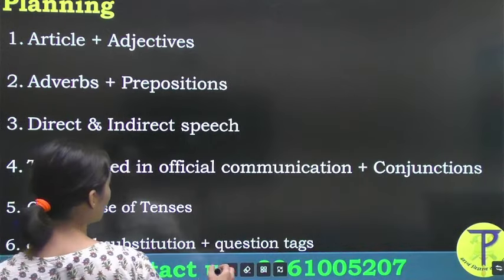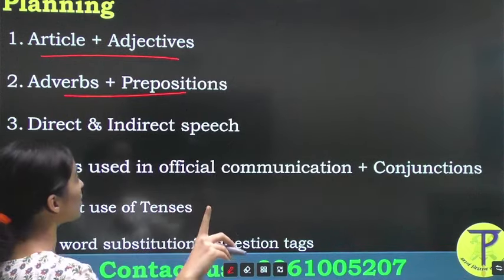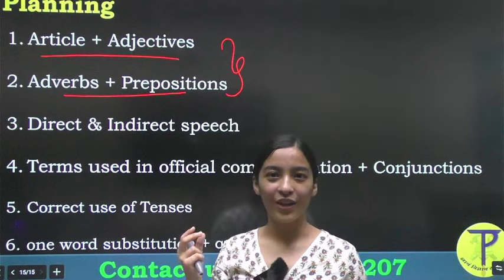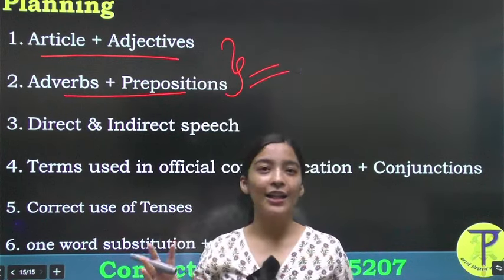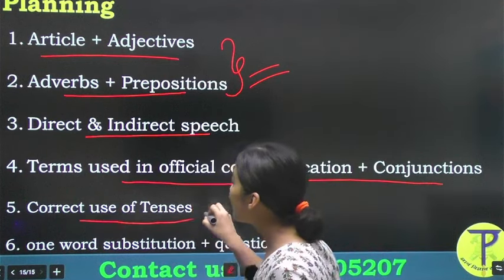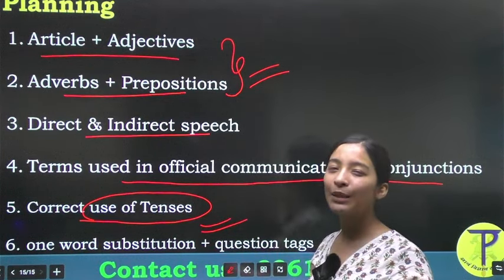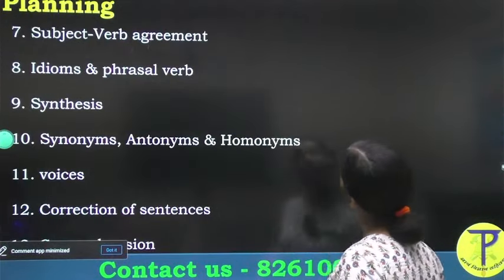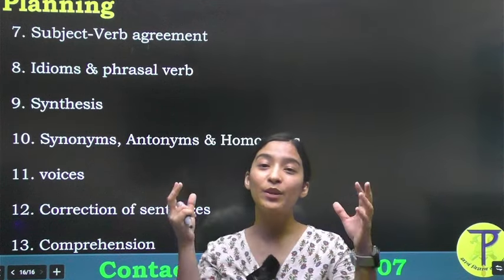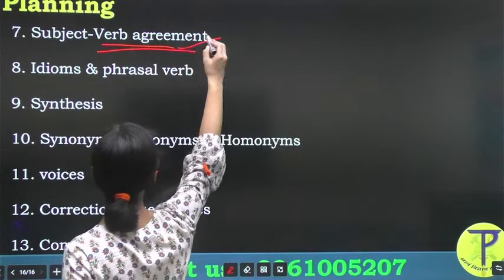The first topic we will be covering is articles plus adjectives, then we will do adverbs plus prepositions. After these four topics your basic grammar portion will be over. You will practice questions and get a fair idea. Then we will proceed with direct and indirect speech, terms used in official communication, conjunctions, and correct use of tenses. After that I have added a fun topic — one word substitution and question tags. I have tried to keep difficult topics first, then easier topics, so you can continuously read, practice, and revise previous topics without feeling too bored or monotonous. Next we will cover subject-verb agreement — a very, very important topic of your syllabus.